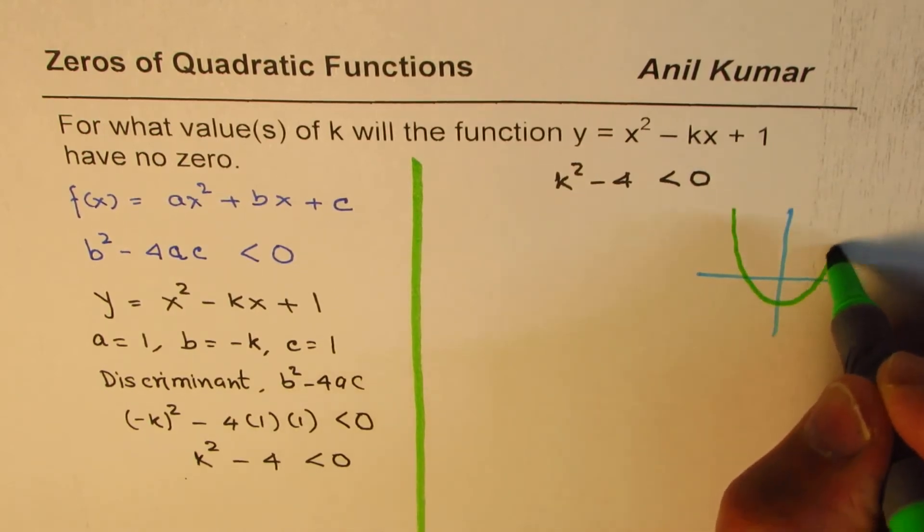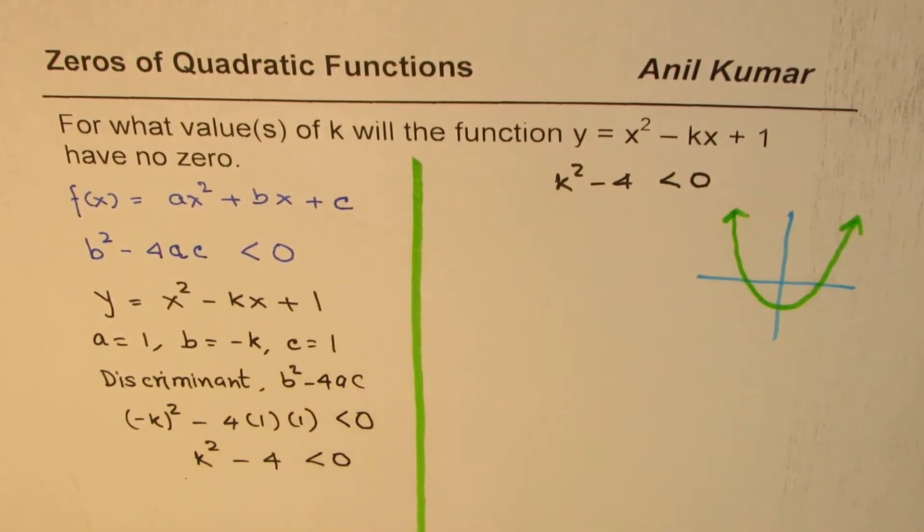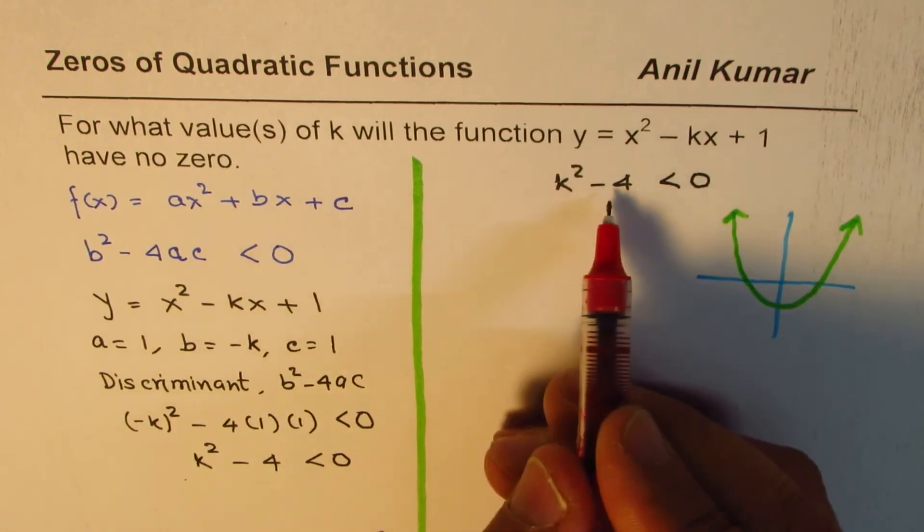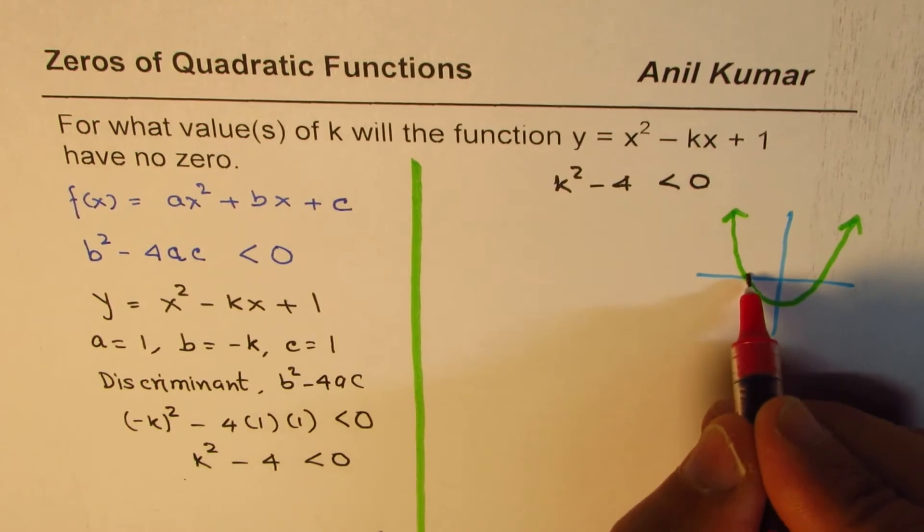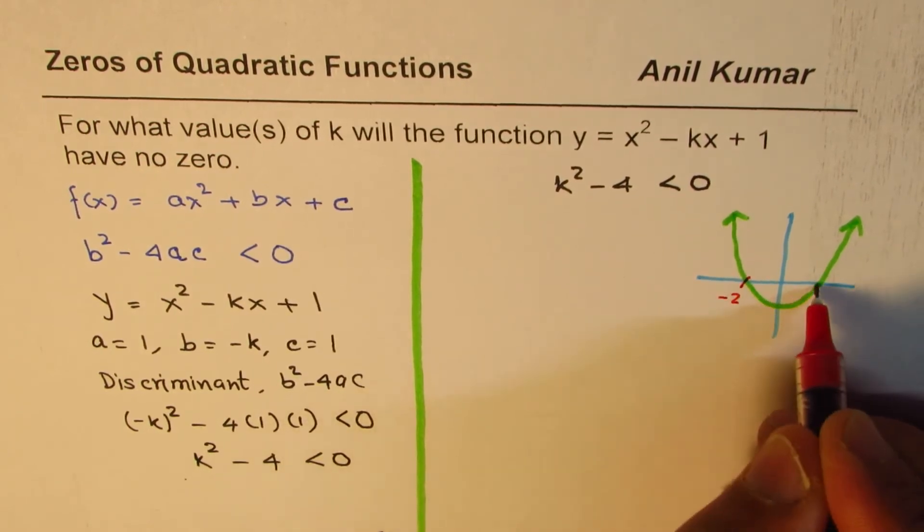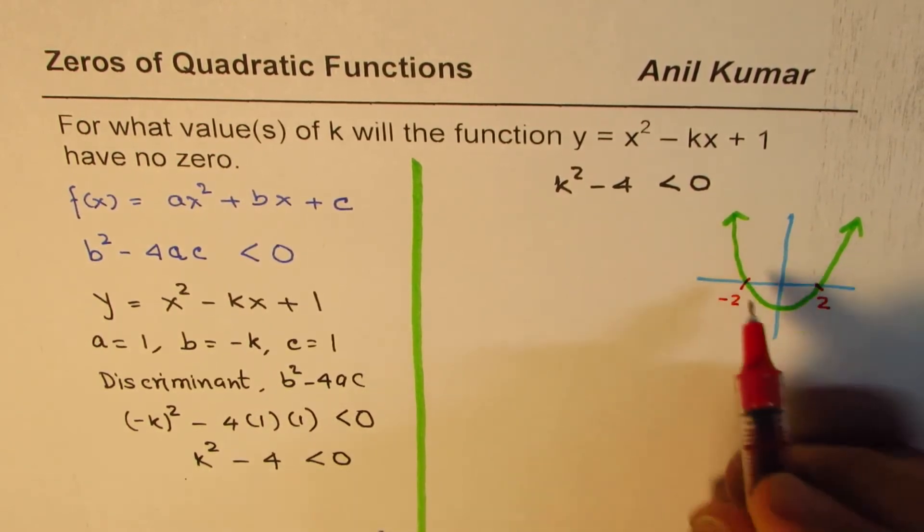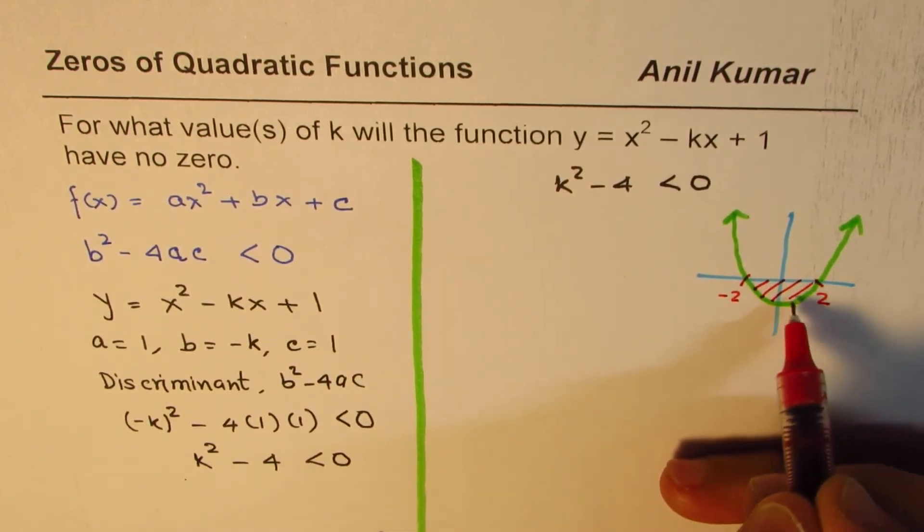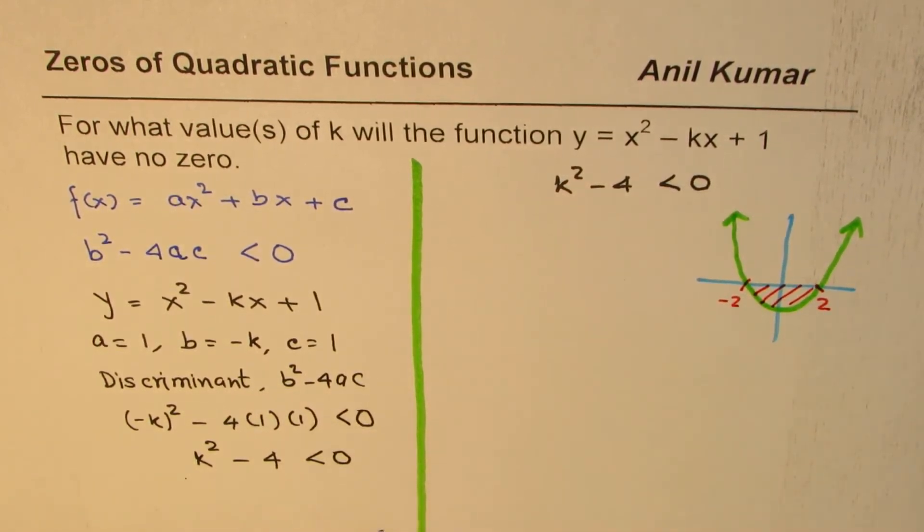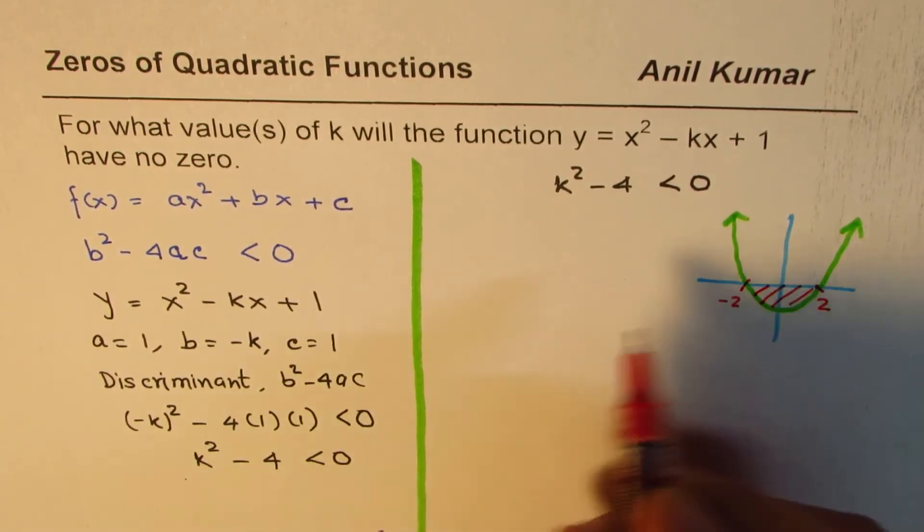And as you can see, this parabola will have zeros at square root of four, plus and minus, at plus and minus two. You can see that this is negative when the graph is in between these two values.